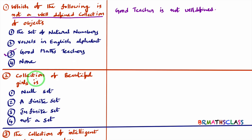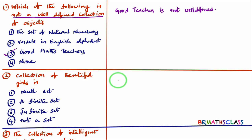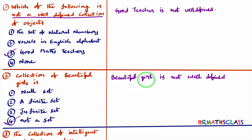The second question: collection of beautiful girls — is it a null set, finite set, infinite set, or not a set? First thing: is 'beautiful girl' well-defined? You take a girl — a particular girl may be beautiful to you, but the same girl may not be beautiful to your friend. So it is not a set, because 'beautiful girl' is not well-defined.